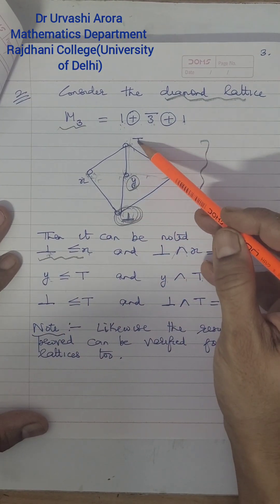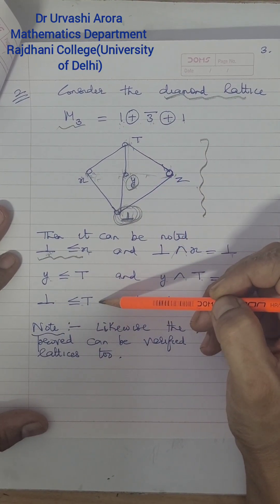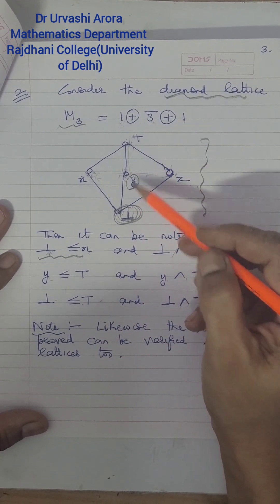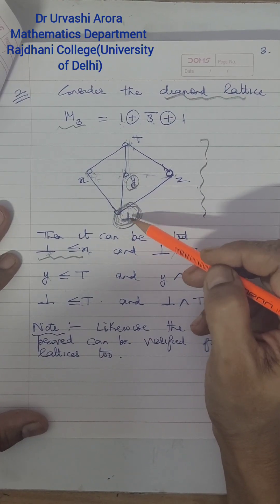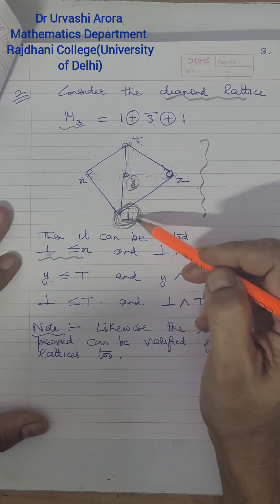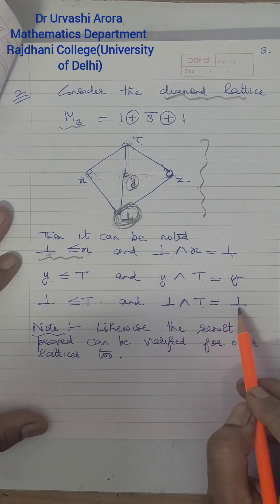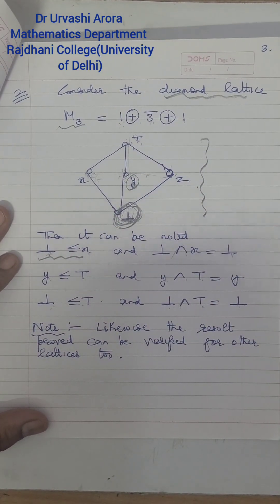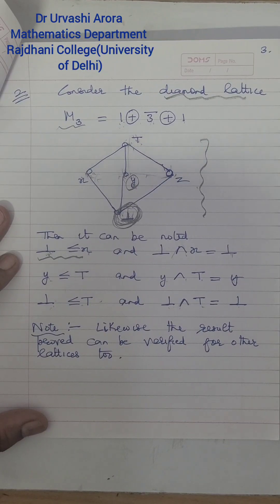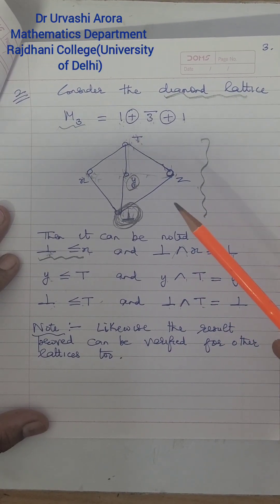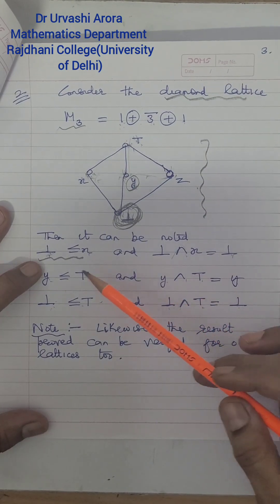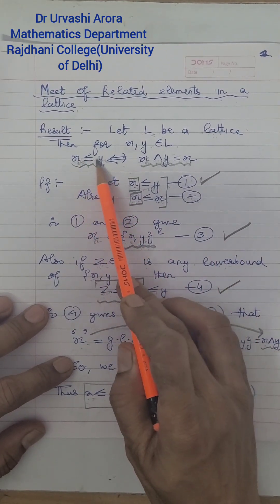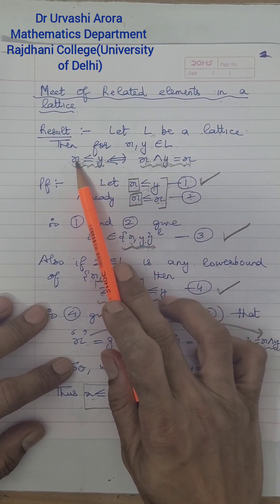If we compare the bottom element with the top element, the bottom element is less than or equal to the top element. Their meet is the only lower bound of these two elements, which is the bottom element — so bottom meet top equals the bottom element, the element on the left. Likewise, we can consider any lattice, pick up any pair of related elements, and always verify that if two elements X and Y are related in a lattice, their meet will always be the element on the left.